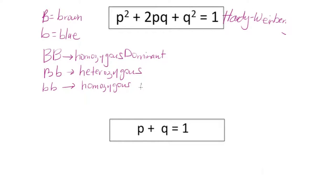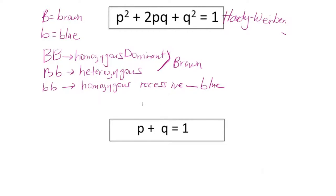The last possibility is to be little b, little b, which is homozygous recessive — two of the same recessive allele. That's the genotype. The phenotype, or physical appearance, for both big B big B and big B little b, is brown eyes, because the dominant allele masks the recessive allele. The only way a person can have blue eyes genotypically is if they are homozygous recessive.